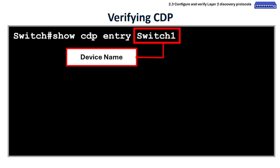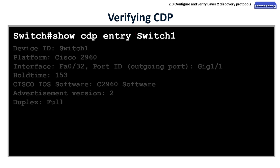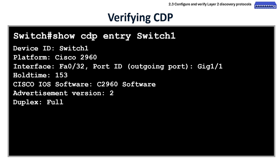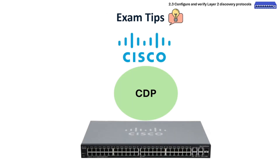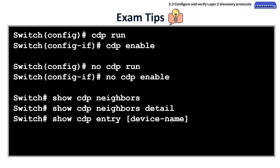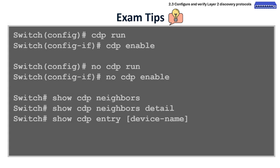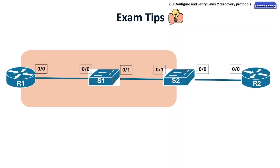The show cdp entry device-name command is used in privileged exec mode to display detailed information about a specific neighboring device discovered via CDP. The output includes details such as device identifier, address list, local interface, port identifier, capabilities list, platform, and other details. Depending on the device and configuration, you might also see native VLAN ID, duplex mode, VTP domain name, and more. For exam tips: remember that CDP is Cisco proprietary. Memorize the basic commands to enable or disable and view neighbors. Note that switch1 only sees directly connected devices — it cannot see a device one or more hops away, such as router2.